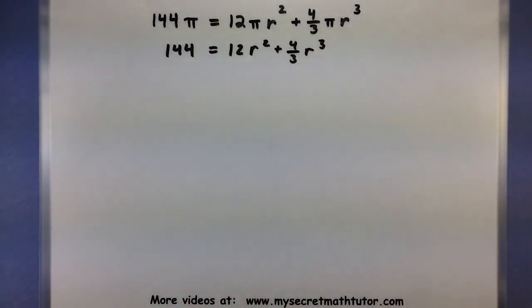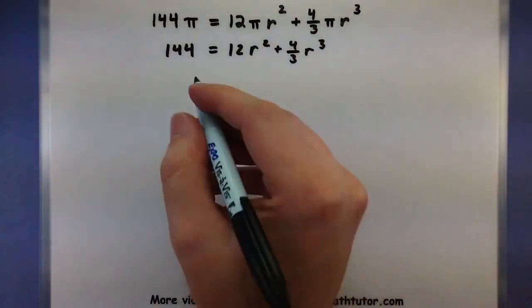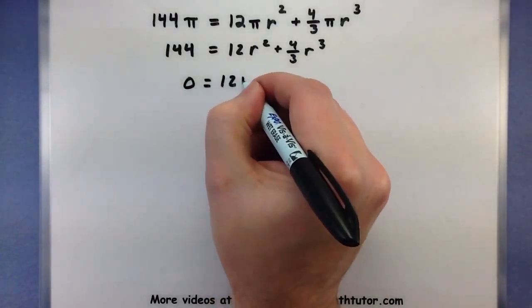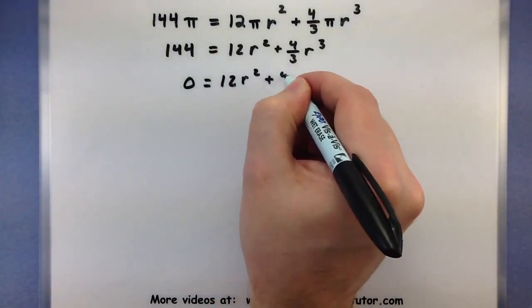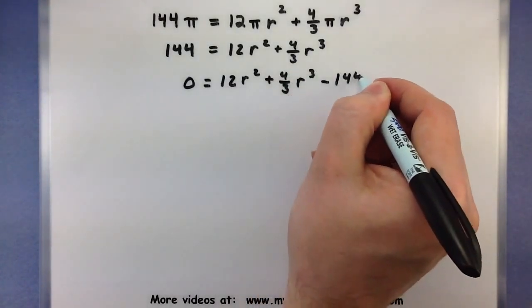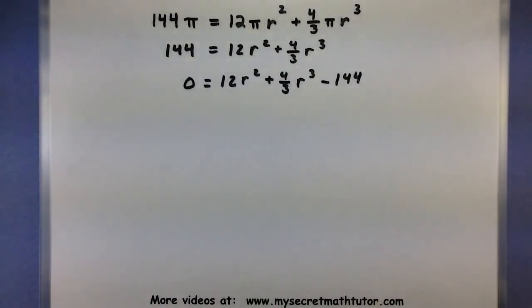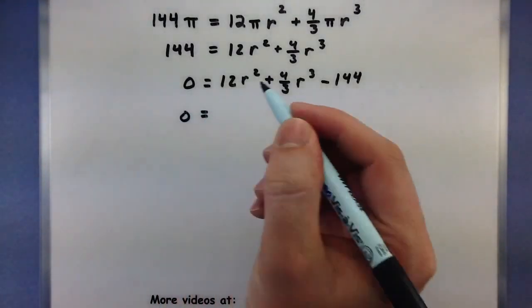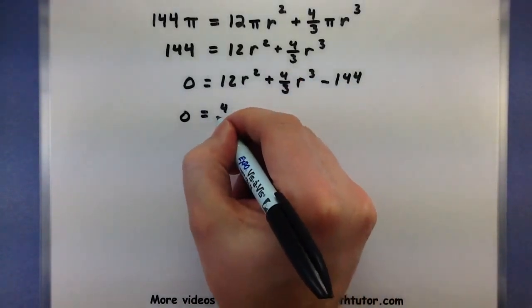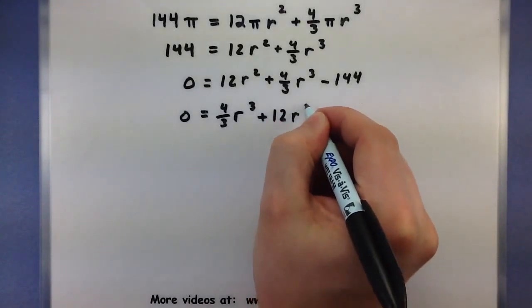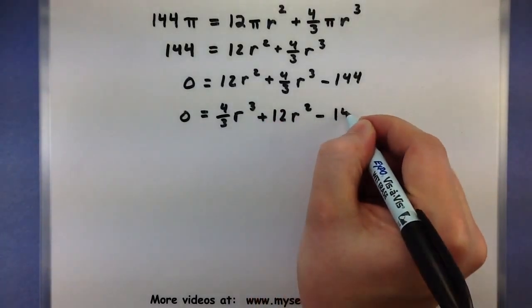That's a little bit better. Now I'll go ahead and subtract the 144. And let's go ahead and write this in descending order. That way I have my r cubed first. So 4 thirds r cubed plus 12 r squared minus 144.